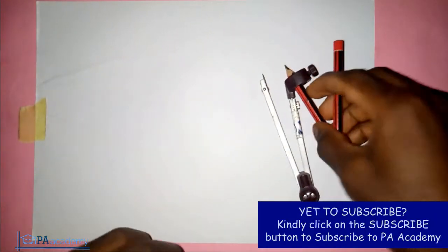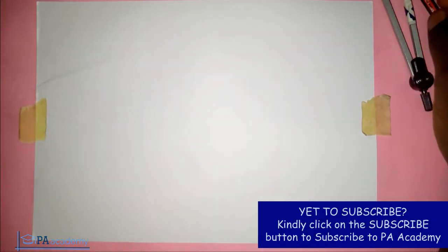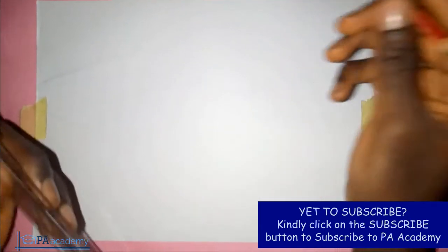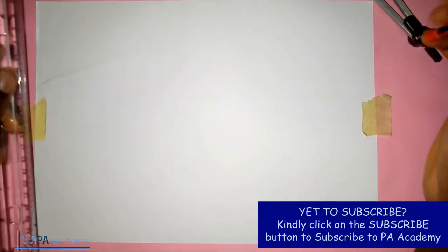Hello and welcome to PA Academy. So in this video I'm going to be showing you how to draw a rectangle when you are given the length of the diagonal and one of the sides. So this is what I mean.